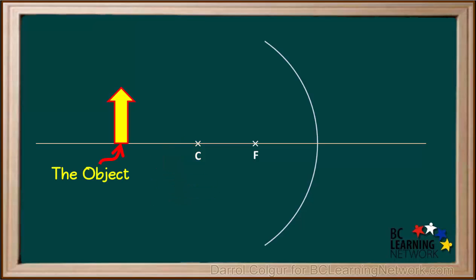We'll use a yellow arrow for our object and place it on the principal axis. In this example, the object is farther from the mirror than the center of curvature C.